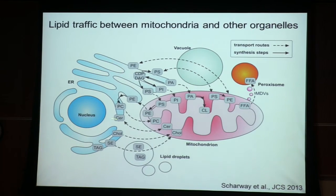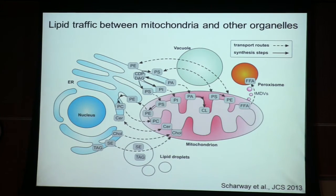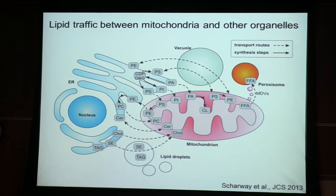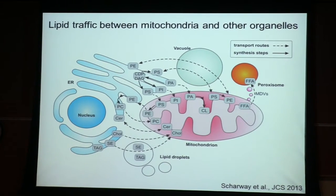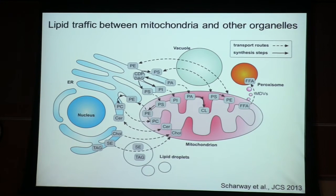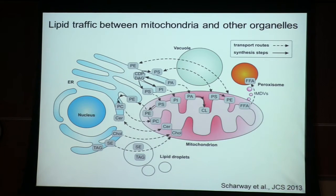For instance, phosphatidic acid is imported from the ER and converted into cardiolipin. But there are also other phospholipids that must be imported into the mitochondria to preserve the mitochondrial lipid composition. There is also a lot of lipid exchange with other cellular organelles that receive lipids synthesized in the ER.